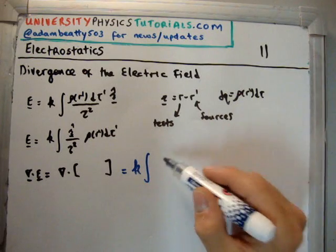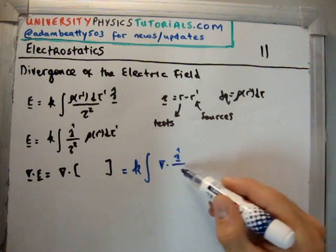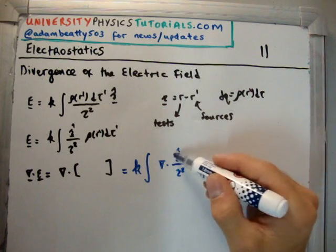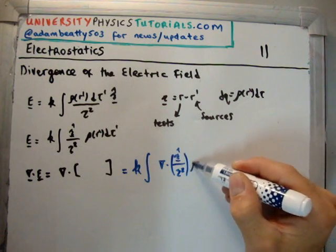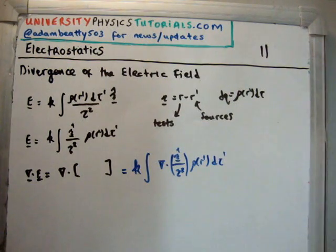So you have k outside of the integral, and then we take the divergence of the separation unit vector divided by the separation vector squared, and we still have ρ of r prime d tau prime.